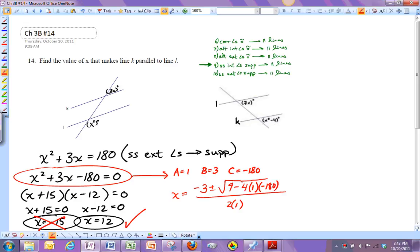And if you work all that out, this ends up being root 729, which is actually a nice number when you take the square root. And at the end of it all, you end up with negative 15 as one of your answers, or 12 for the other answer.